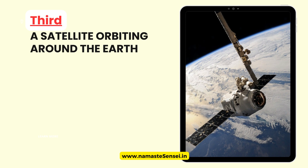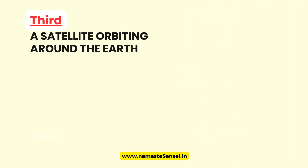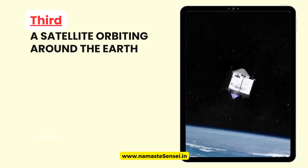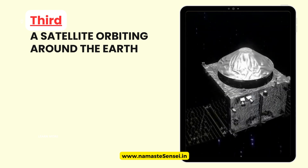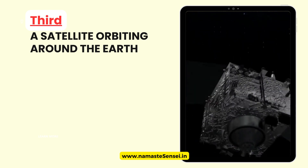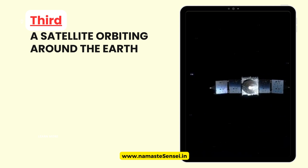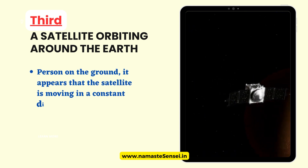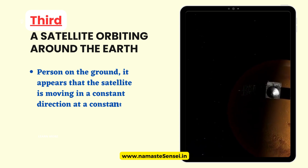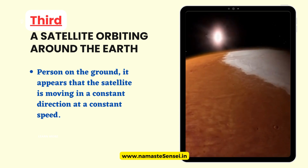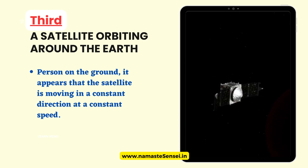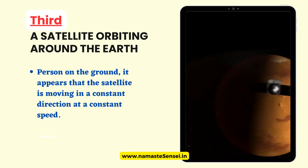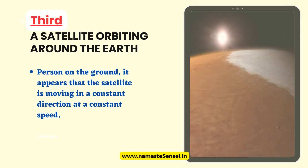Third, a satellite orbiting around the Earth. A satellite orbiting around the Earth is an example of relative motion. Imagine a person standing on the ground looking up at the satellite as it moves in a circular path around the Earth. To the person on the ground, it appears that the satellite is moving in a constant direction at a constant speed. However, the satellite is actually moving very fast and constantly changing direction due to the gravitational pull of the Earth.